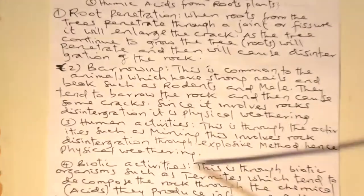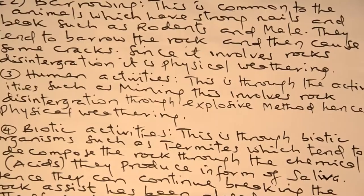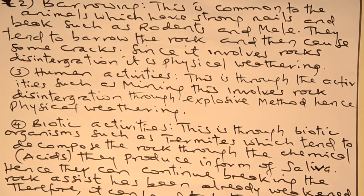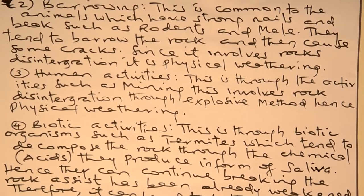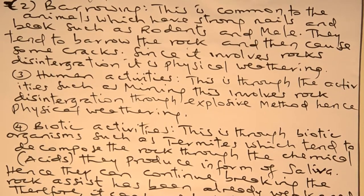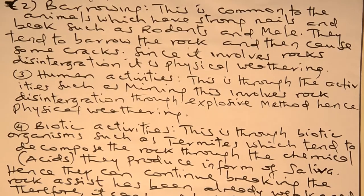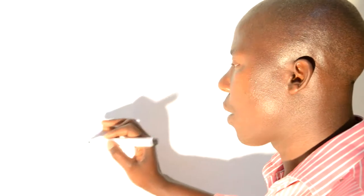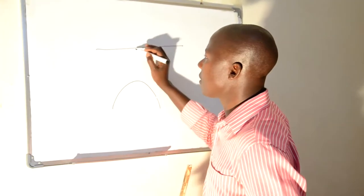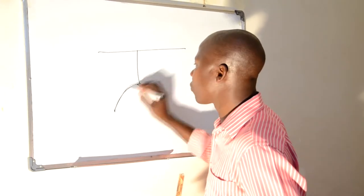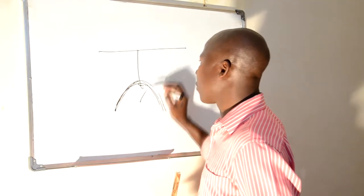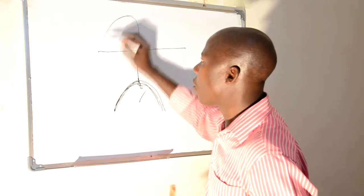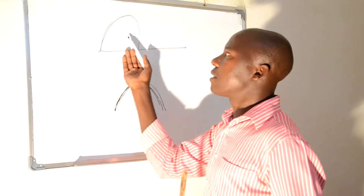Through activities such as mining, this involves rock disaggregation through explosive methods; hence physical weathering takes place. Mining can cause weathering to take place due to explosives. Human beings can cause weathering through their activities. For instance, those exporting minerals through explosive processes — where the explosive reaches the rock, the rock can be broken apart. Not only within the crust but also rock on the surface can be affected.